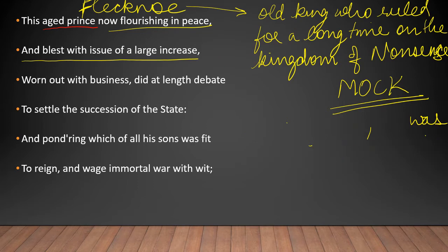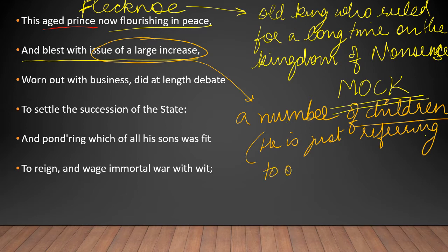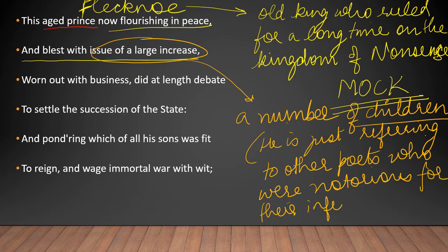He says 'blessed with issue of large increase.' Here the meaning of the word issue is children. He had a number of children. Now my question to you is, is the poet really talking of Flecknoe's real children? No, he is just referring to other poets who were notorious for their inferior poetry.